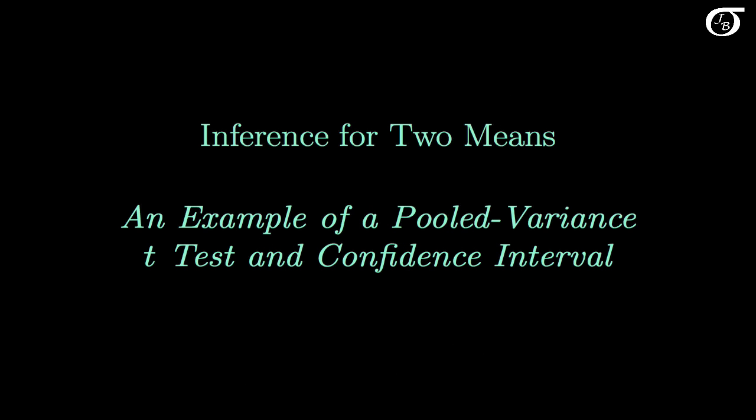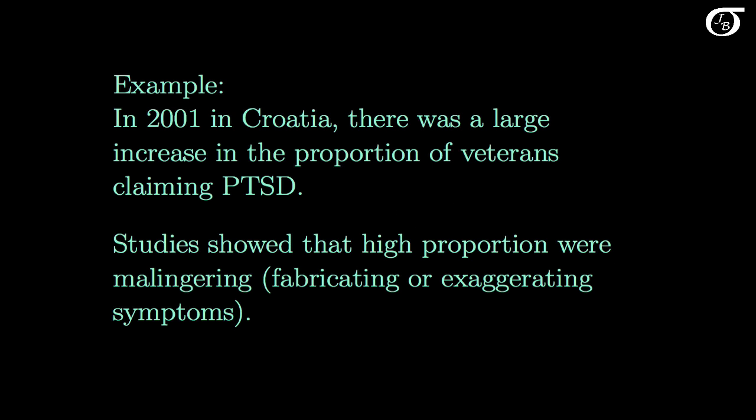Let's look at an example of a pooled variance t-test and confidence interval. In 2001 in Croatia, there was a large increase in the proportion of veterans claiming post-traumatic stress disorder, and this corresponded with a change in government policy to award compensation to those with PTSD. Studies showed that a high proportion were malingering, meaning they were fabricating or exaggerating symptoms, possibly in order to get this compensation.